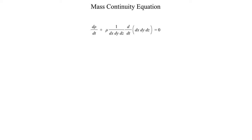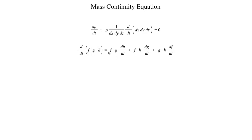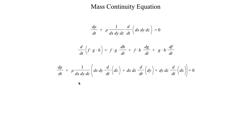Now we go back to calculus and invoke a product rule again. Most of you are familiar with the product rule for two terms, but here we have a product of three terms. The three-term product rule gives: the first term times the second times the derivative of the third, plus the first times the third times the derivative of the second, plus the second times the third times the derivative of the first. Applying that to our equation gives us: dρ/dt + ρ · (1/V) · [dx·dy · d(dz)/dt + dx·dz · d(dy)/dt + dy·dz · d(dx)/dt] = 0.